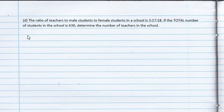So, let's look at this ratio that we're given. The ratio of teachers to male students to female students is 3 to 17 to 18. It says here, if the total number of students in the school is 630. Now, bear in mind that when you add the number of male students to the number of female students, you'll get the total number of students in the school.